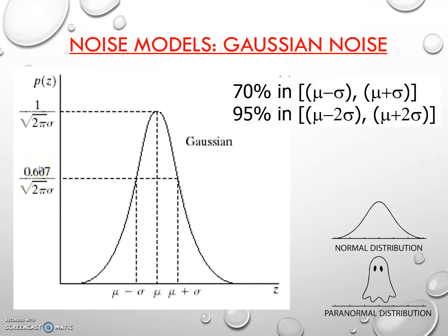So, this is how the graph is derived. Mathematically, in the interval from μ minus σ to μ plus σ — this entire region — nearly 70% of the values lie. From μ minus 2σ to μ plus 2σ, nearly 95% of the distribution is covered. We generally don't go beyond it. That's all the mathematical things about Gaussian noise.